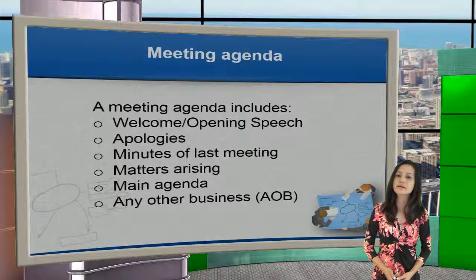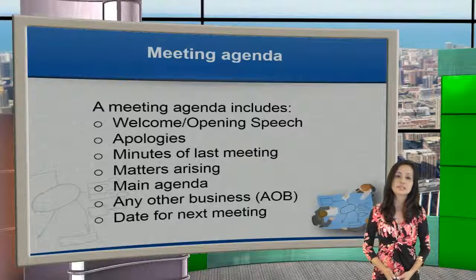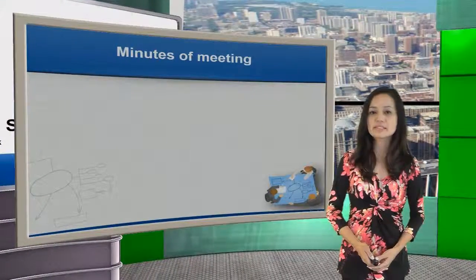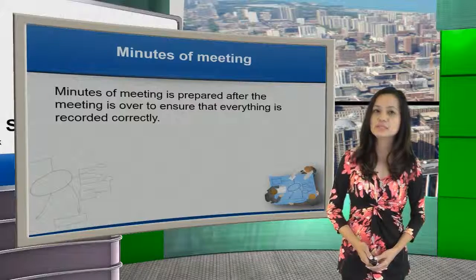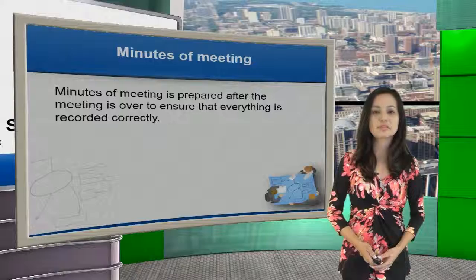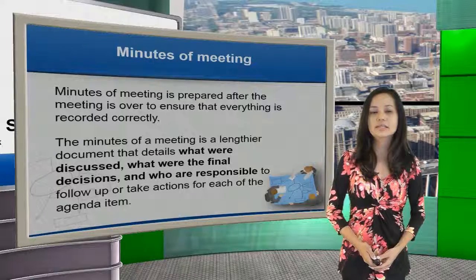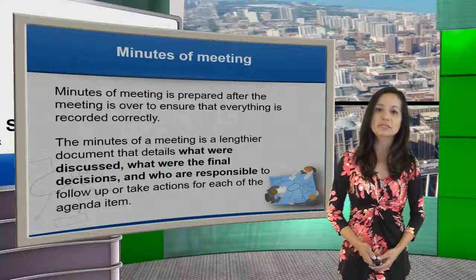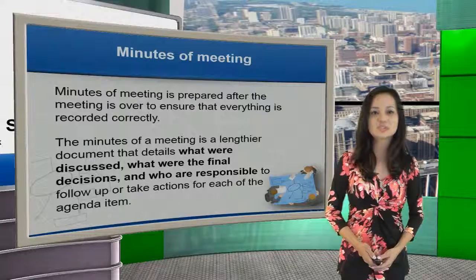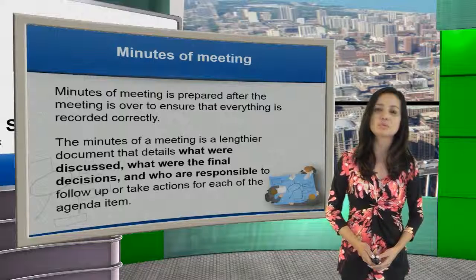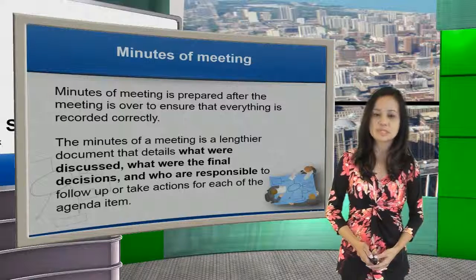The agenda also includes the main agenda, any other business, and finally the date for the next meeting. Apart from that, the third document we'll need is the minutes of the meeting. Minutes of the meeting are prepared only after the meeting is over to ensure that everything is recorded correctly, covering what was discussed, the final decisions, and who is responsible to follow up on certain agenda items.